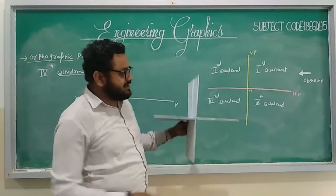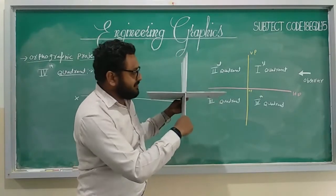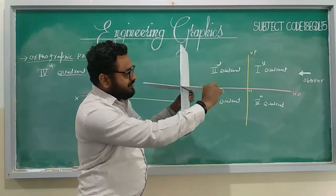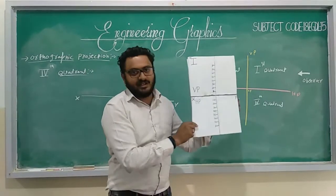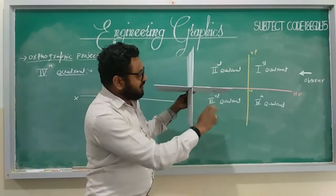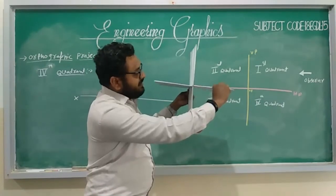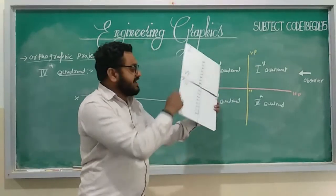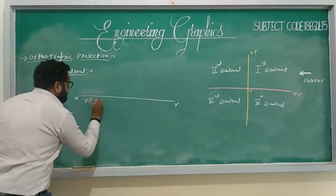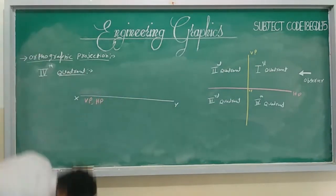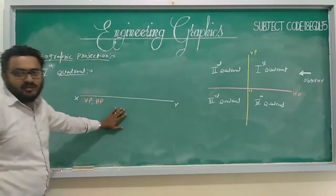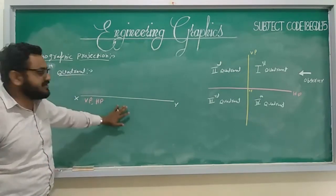Now for the fourth quadrant — in this compartment VP is already here below. When you rotate the horizontal plane clockwise, HP will also come downside. So both VP as well as HP will be below the XY line. Therefore, both the front view and top view will also be below the XY line. So like this, all four quadrants can be represented in 2D mode.